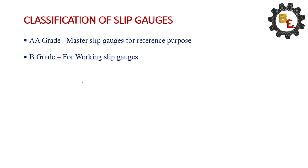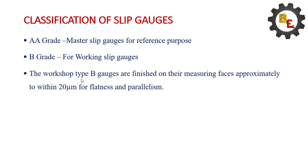B Grade - for working slip gauges. The workshop type B gauges are finished on their measuring faces approximately to within 20 microns for flatness and parallelism.